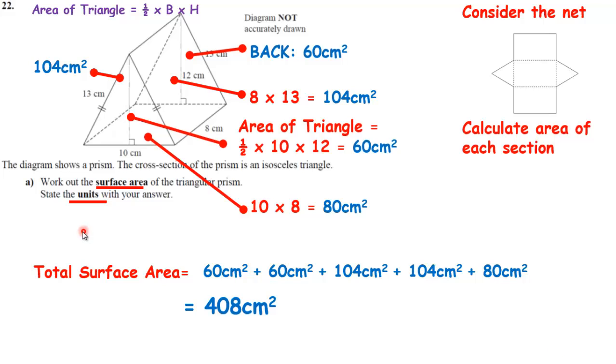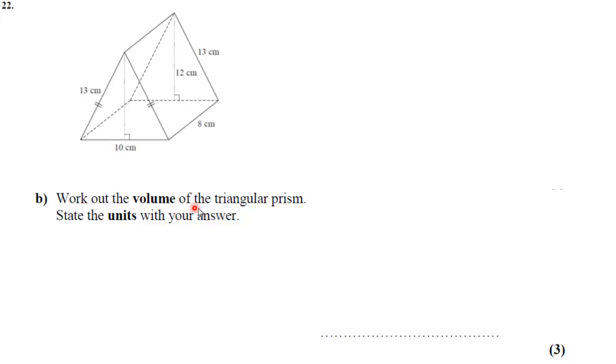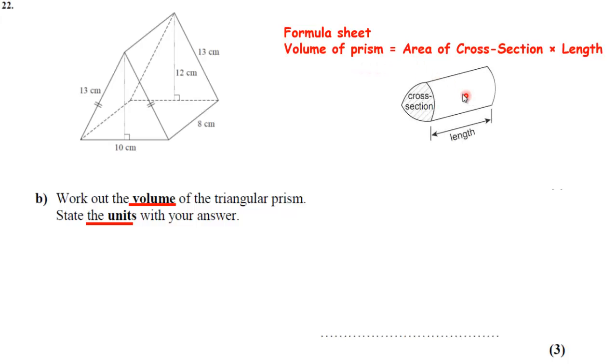Let's go on to part B. Part B says work out the volume of the triangular prism. State the units of your answer. So it is a volume. All the units are in cm, so I know it is going to be cm cubed. That is going to be the units of my answer. To work out the volume of a triangular prism, I need to find the area of the front and times it by how far back it goes. So this is given on the formula sheet. The area of the cross-section, which is the area of the front,